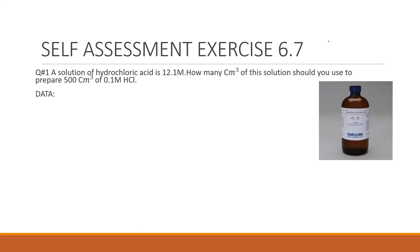Problem 1: A solution of hydrochloric acid is 12.1 molar. How many cm³ of this solution should you use to prepare 500 cm³ of a solution with molarity 0.1 molar HCl? The stock solution has molarity M1 = 12.1 M. The volume of stock solution V1 is unknown and needs to be calculated. The new solution volume V2 = 500 cm³ and M2 = 0.1 M.